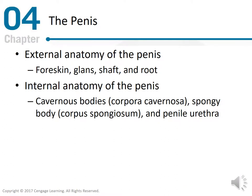The Penis. There are external and internal anatomy factors to be considered. External anatomy of the penis includes foreskin, glands, shaft, and root. Internal anatomy of the penis includes cavernous body, spongy body, and the penile urethra.